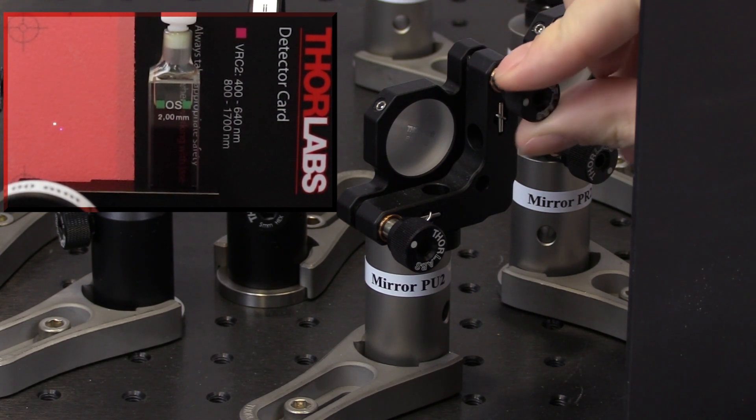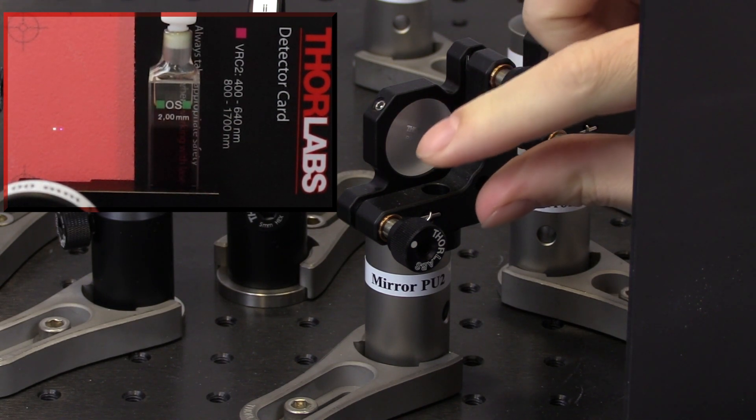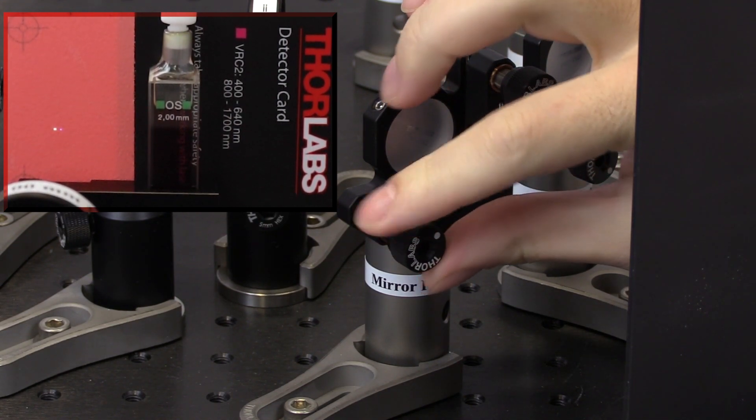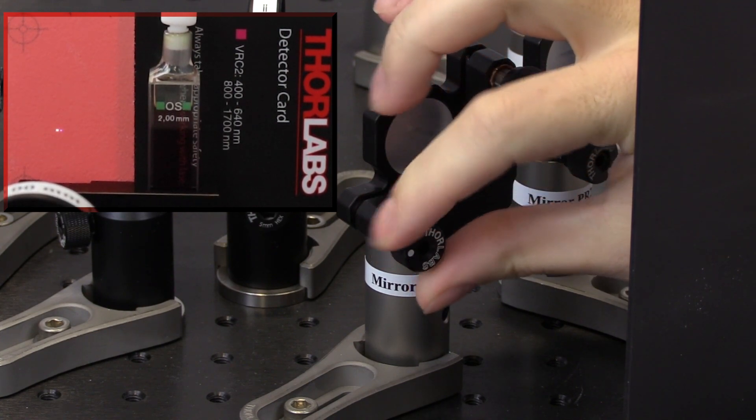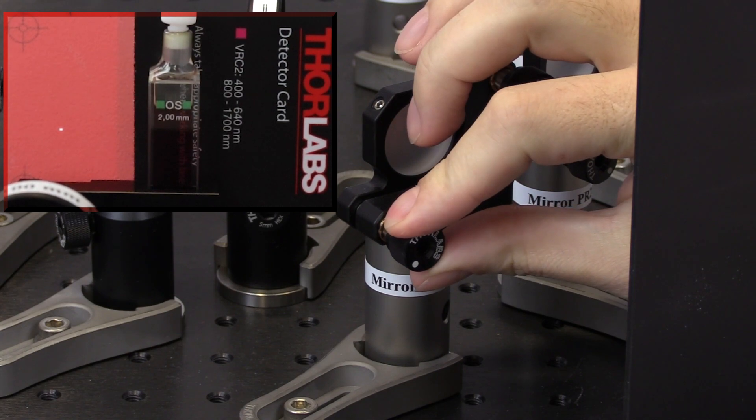The top right adjuster translates the vertical beam position. Adjust this knob until the two beams are vertically aligned. The bottom left adjuster changes the horizontal position. Adjust this knob until the two beams overlap.